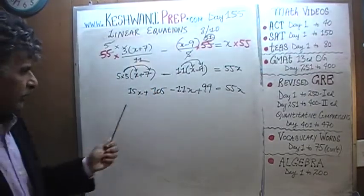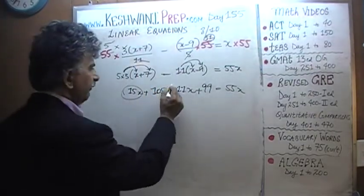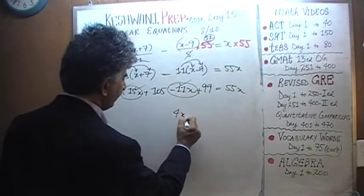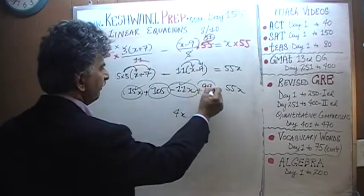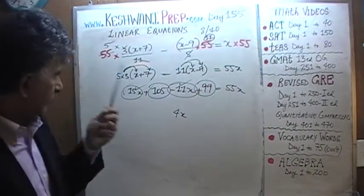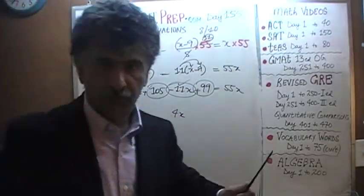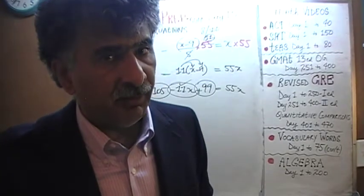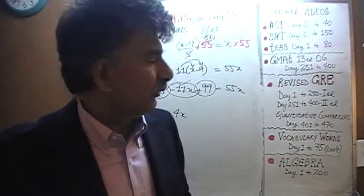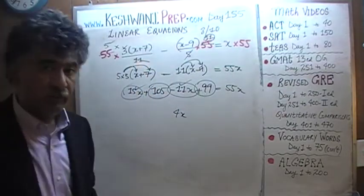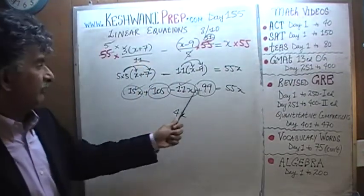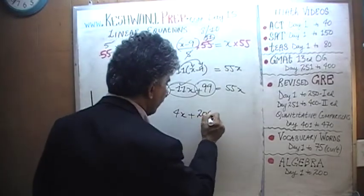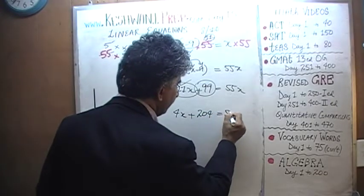Now we combine our like terms. We have 15x and we have negative 11x. That's going to give us 4x. And then we have 105 plus 99. I know 105 plus 100 would have been 205, so 105 plus 99 would be one less than that, 204. And that equals 55x.